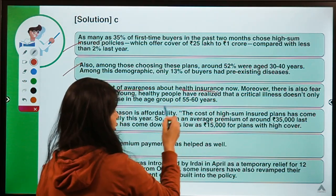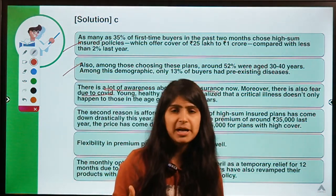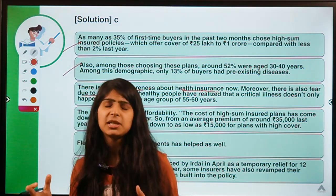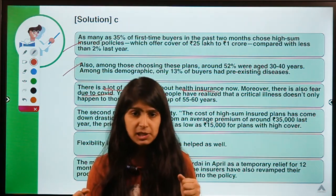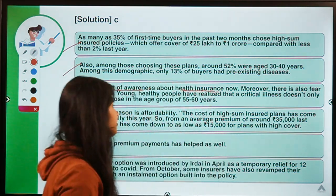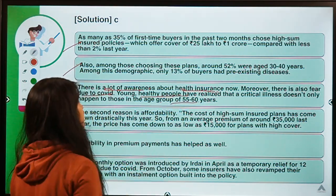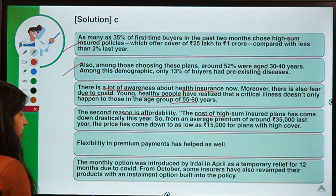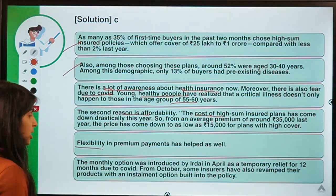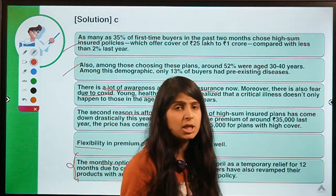A lot of awareness about health insurance has been driven by fear due to COVID. Notably, young people are now also buying medical insurance, whereas earlier there was a tendency to think only older people need it since they are more vulnerable to illness. COVID has changed this mentality — young and healthy people have realized that critical illness does not only affect older people. The second key reason is affordability: average cost of insurance has come down, and customized products with flexible EMI payment options are now available.